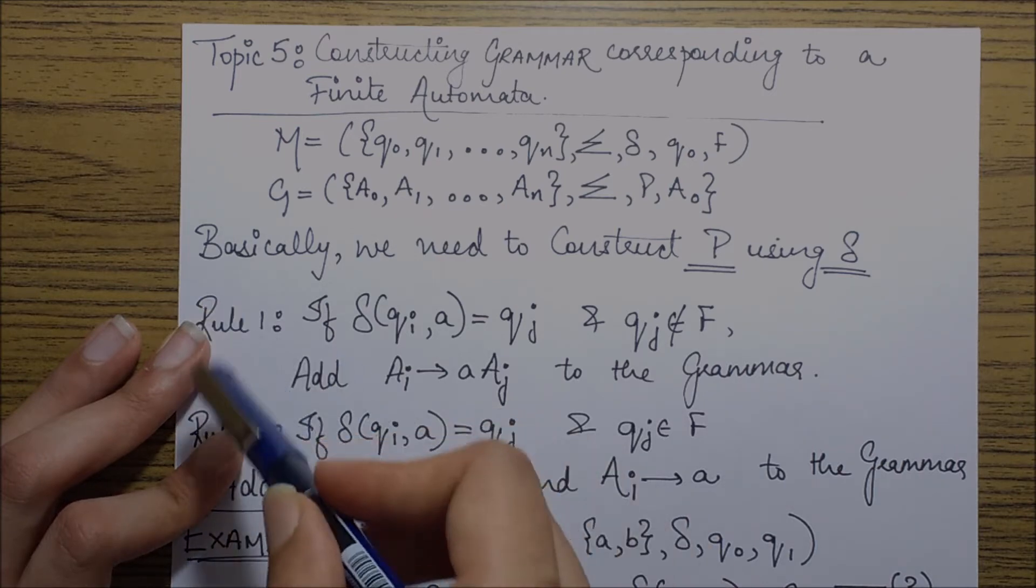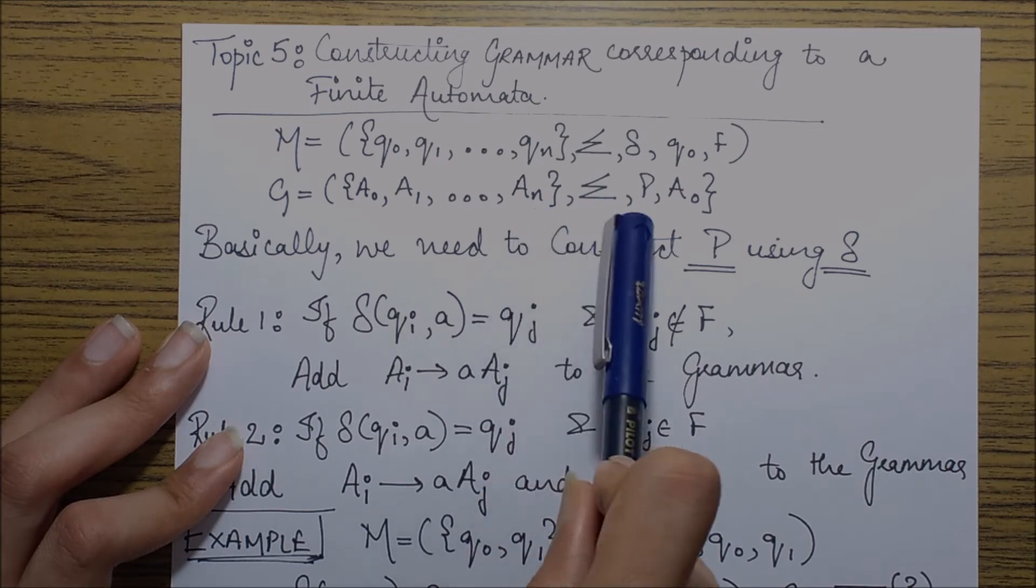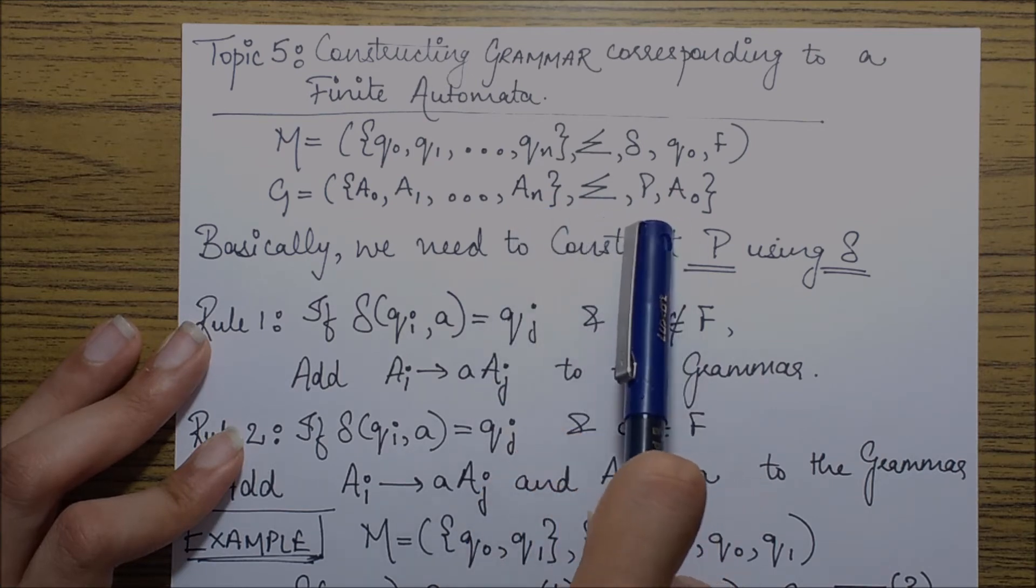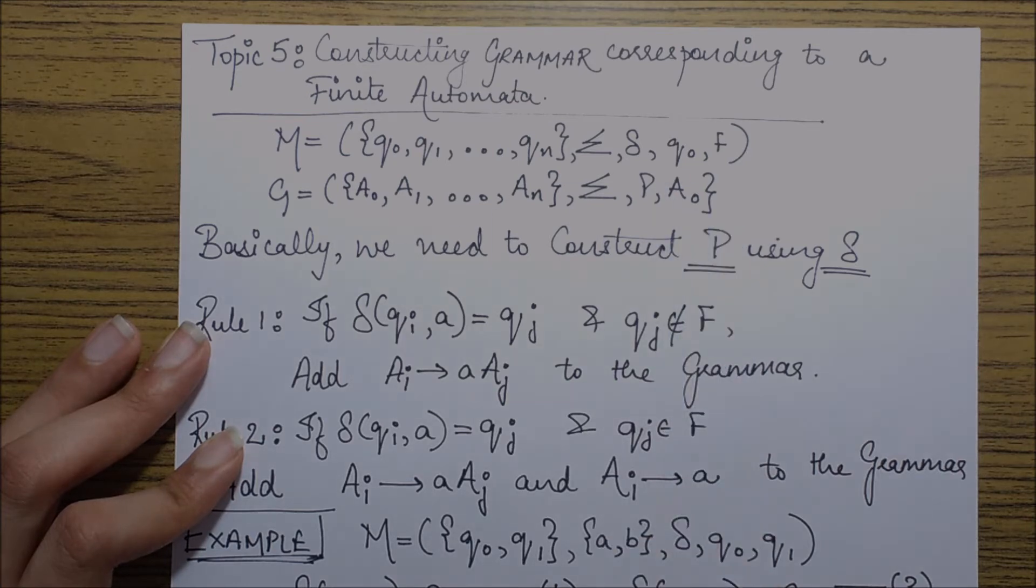Which is comprising of set of non-terminals, set of terminals, production set, and the starting symbol, which is A naught over here.